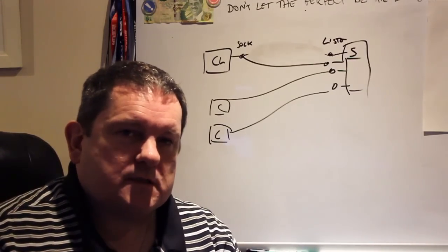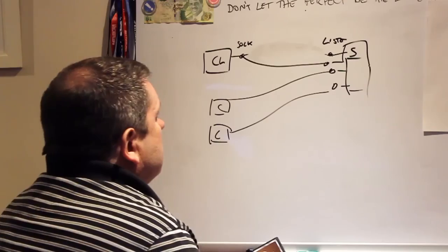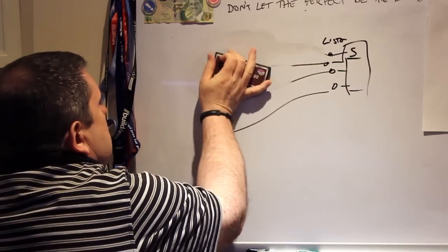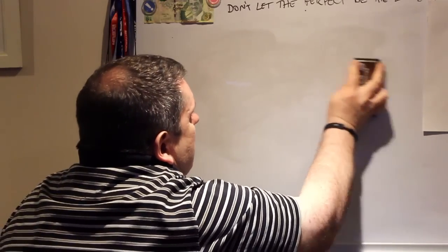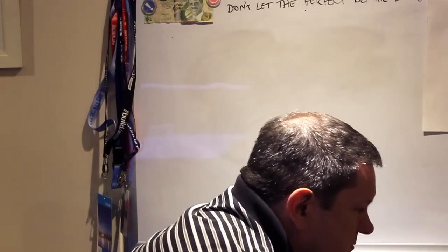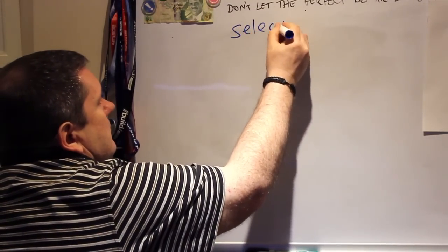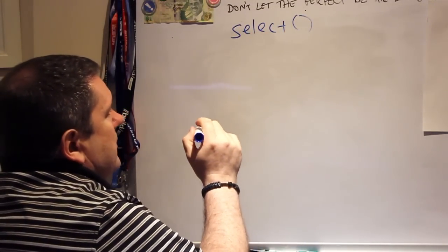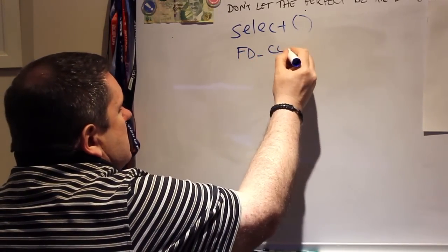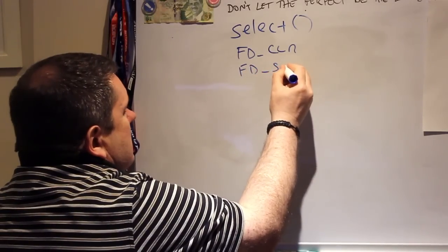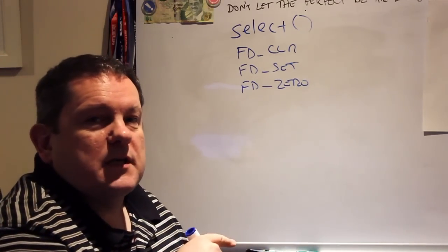What I'm going to propose is that we use something called the SELECT function. The SELECT function has a few associated macros: FD_CLR, FD_SET, and FD_ZERO. Those are macros associated with this function. The reason they're called FD is because a socket is a file descriptor — everything is a file in Unix. In Windows we call them sockets, but they're still prefixed FD.